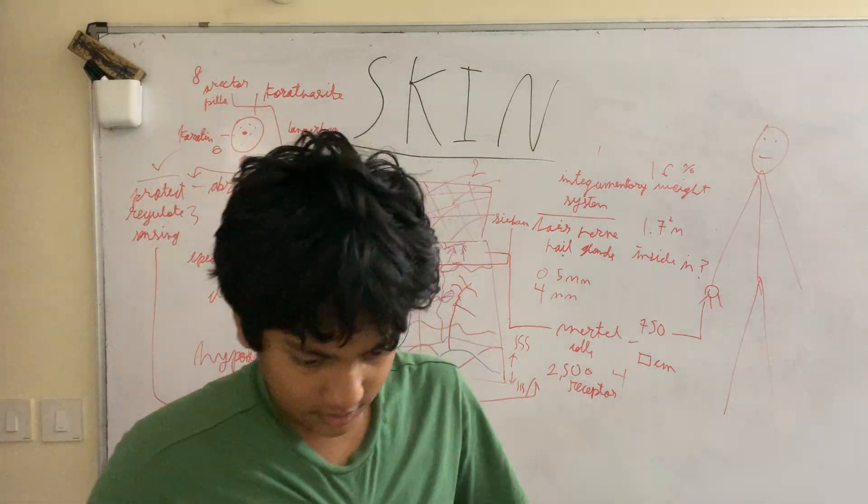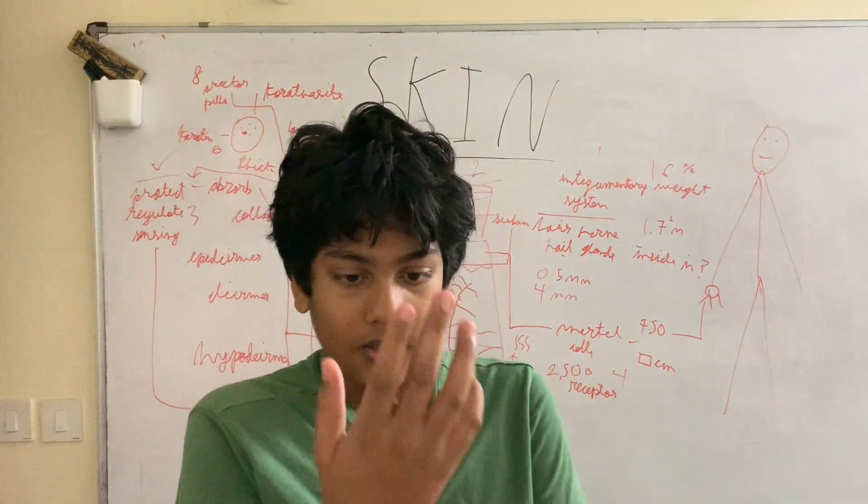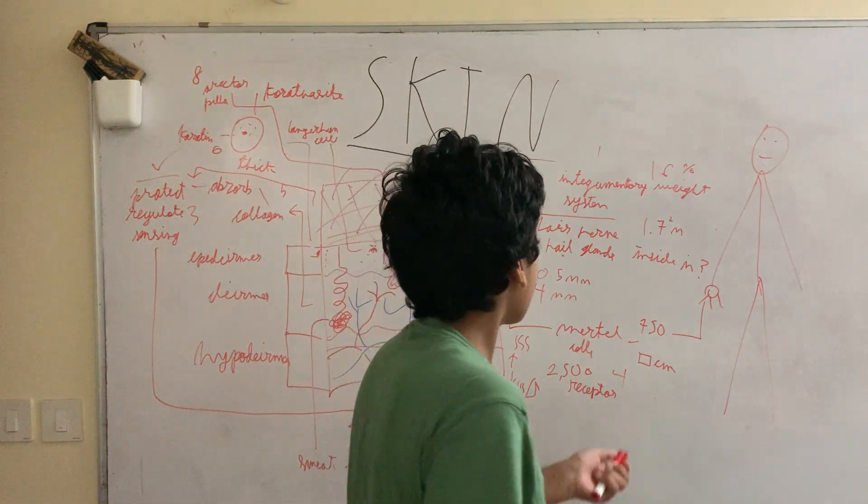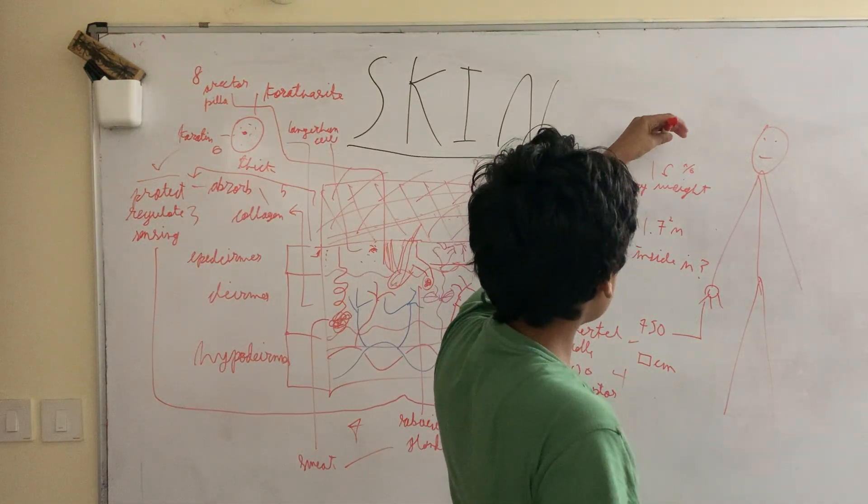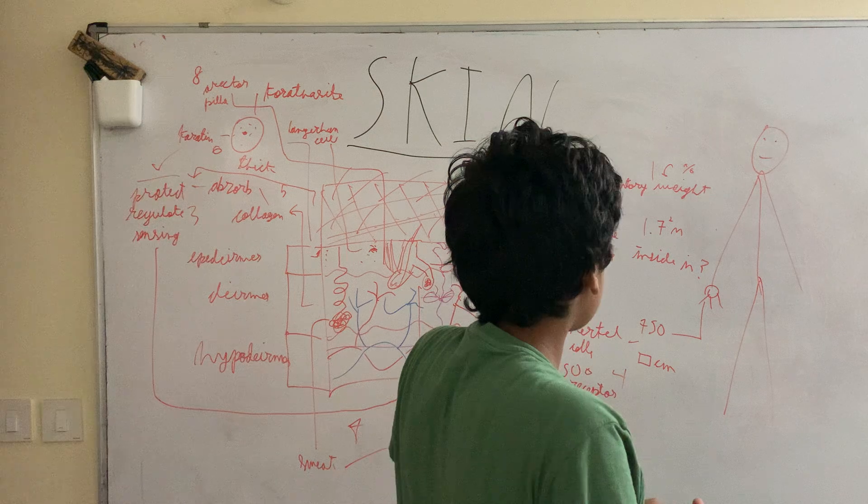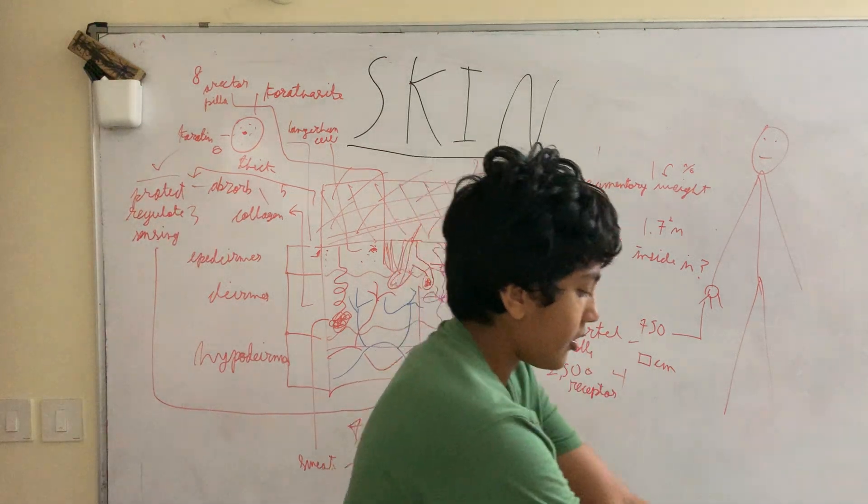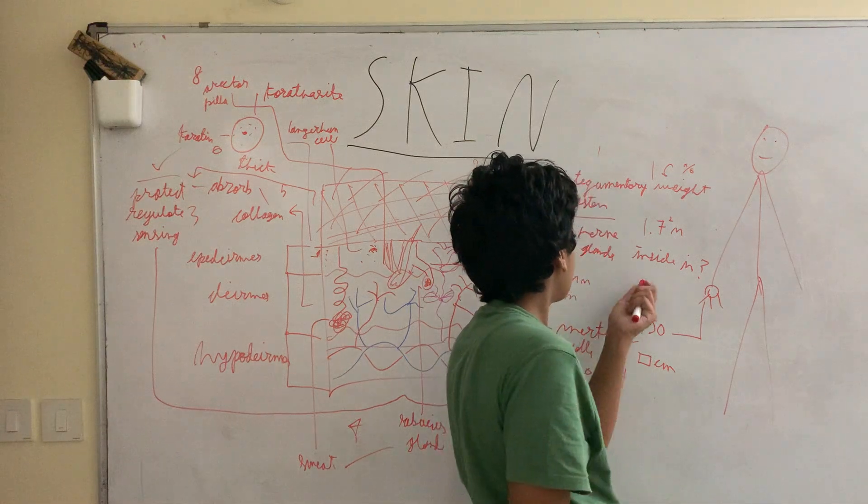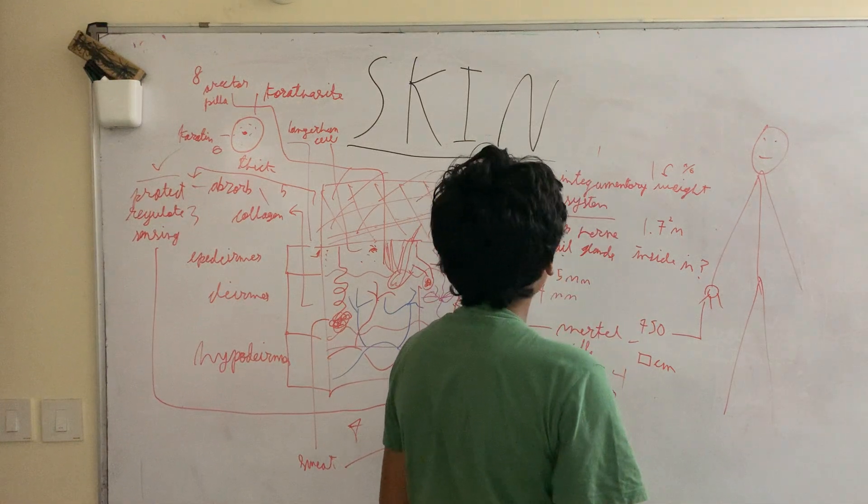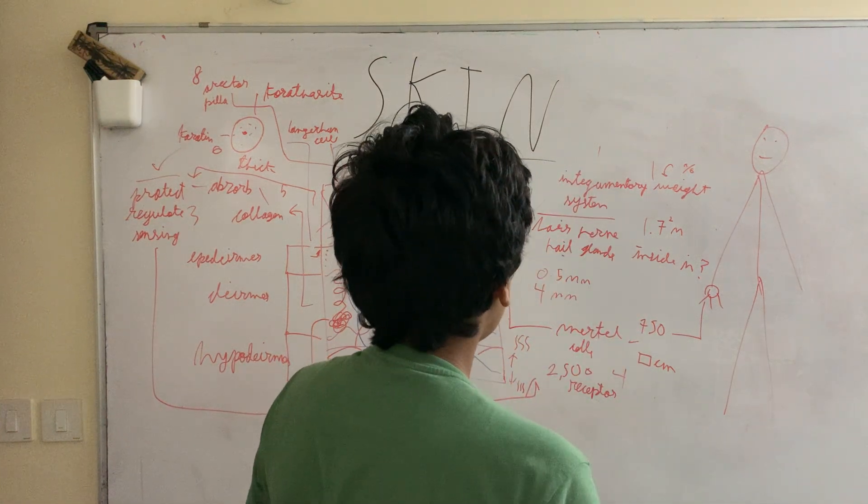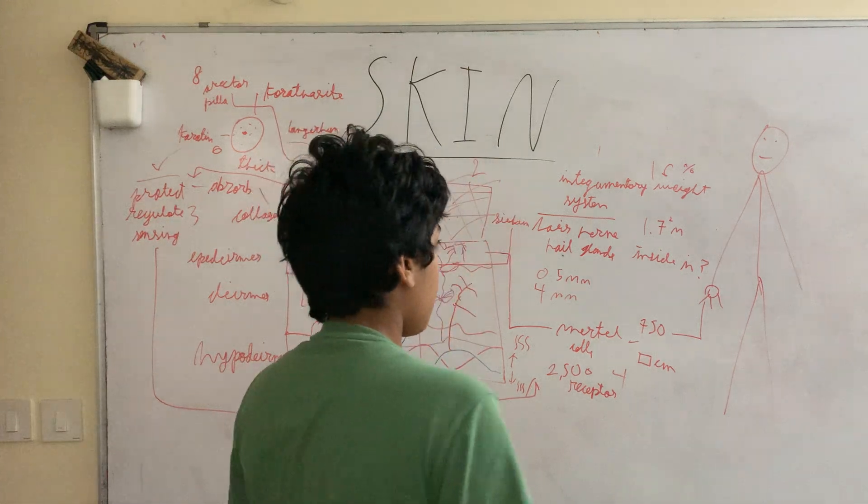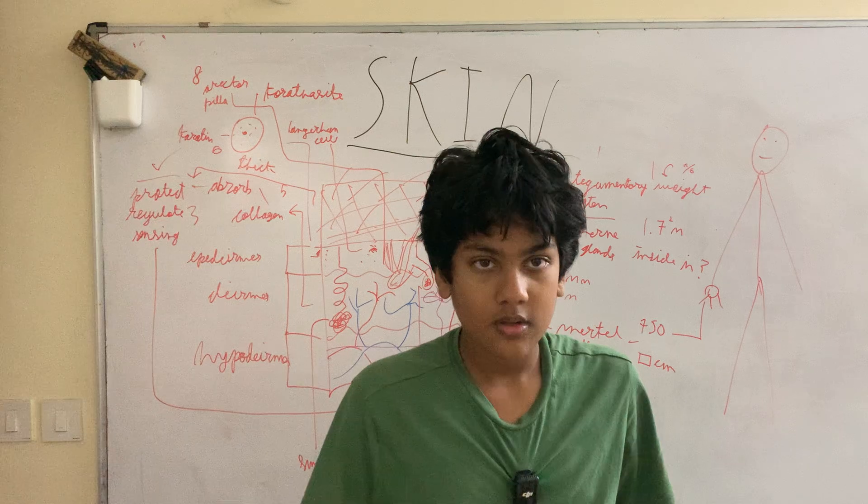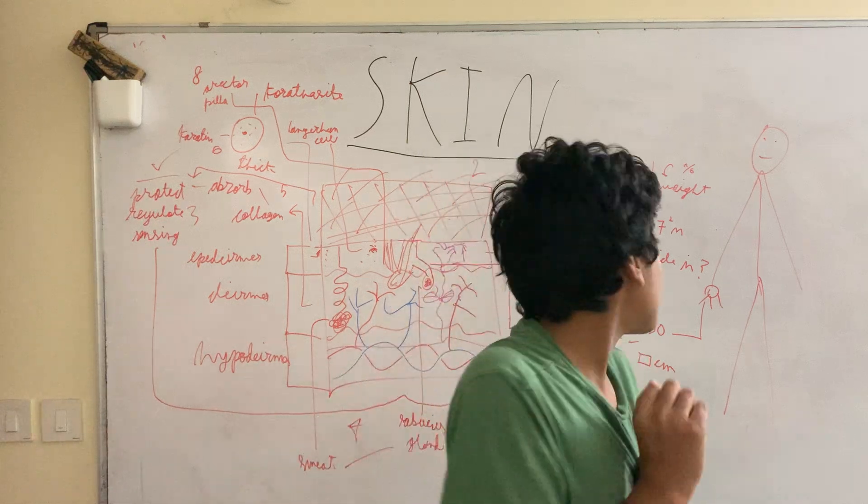If you did not know, the skin is the largest organ in our body. It covers us entirely and basically contributes to 16% of our weight. If you just chopped it all off and put it straight fresh on the ground, it would roughly be around 1.7 square meters.